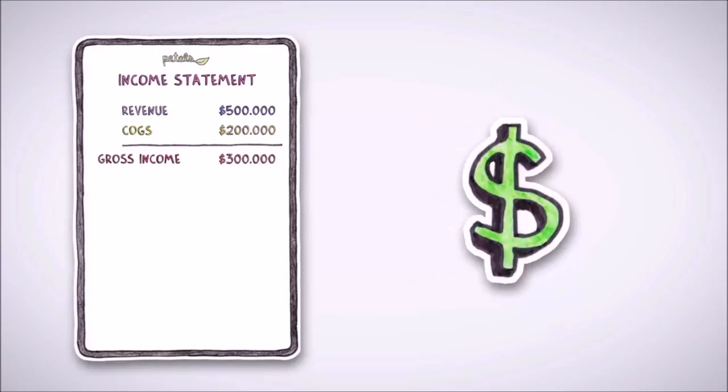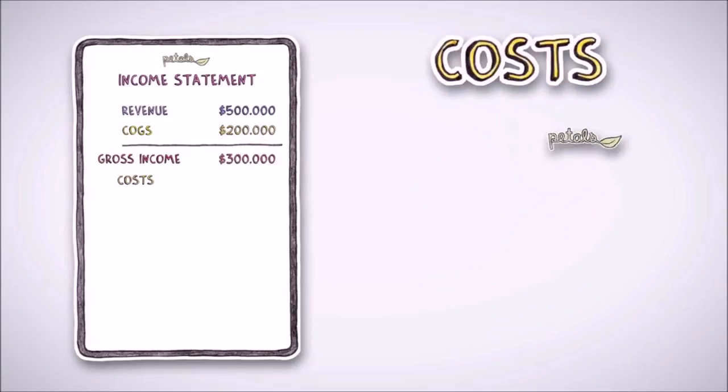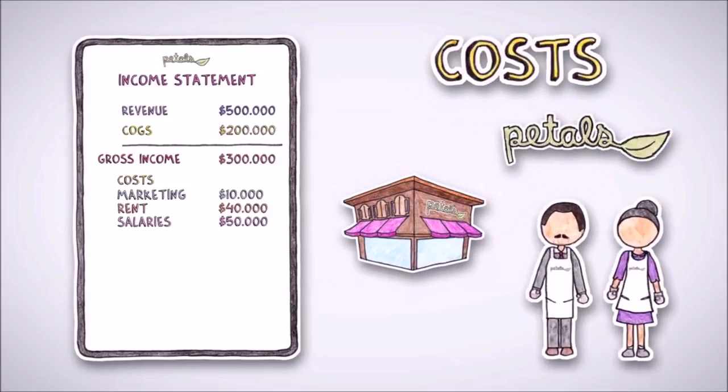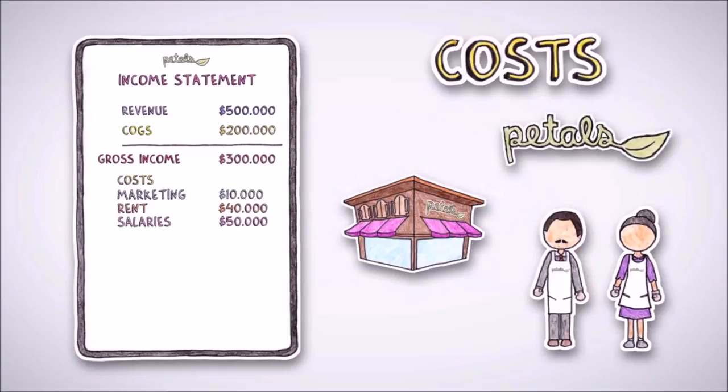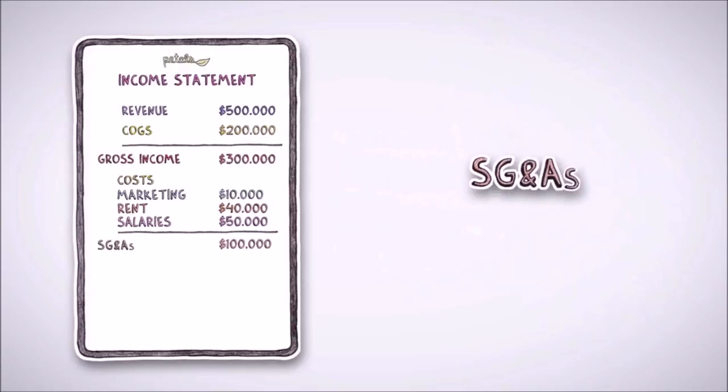After that, Mary adds up her non-direct costs. These are costs she incurs that aren't related to sales. Petals costs included marketing, rent, and salaries to her two store managers. These costs are known as selling, general, and administrative costs, or SG&As, and are often thought of as the company's overhead.